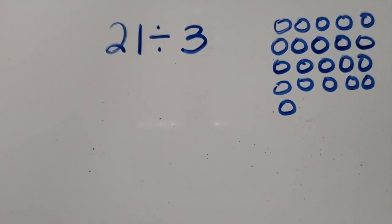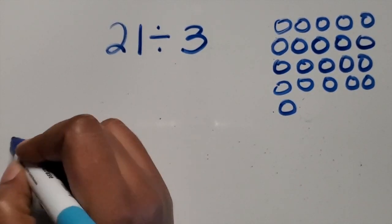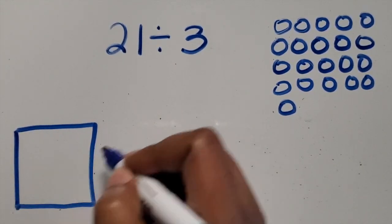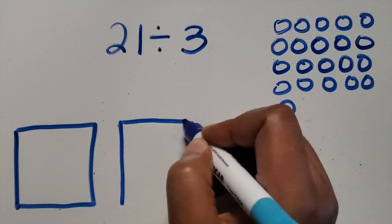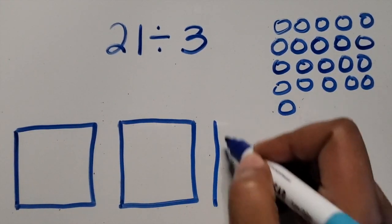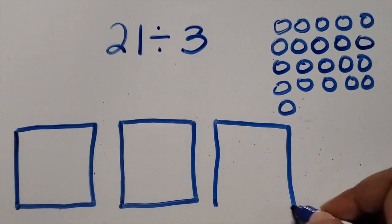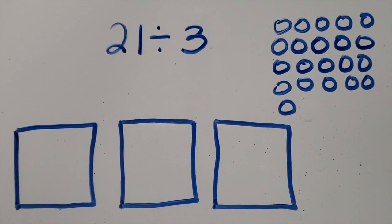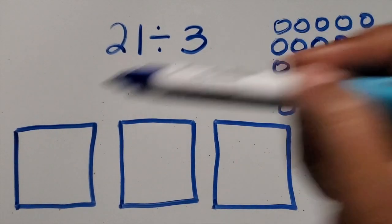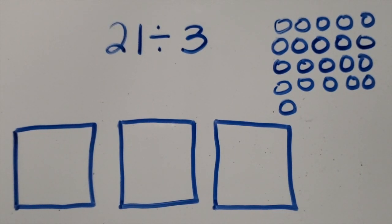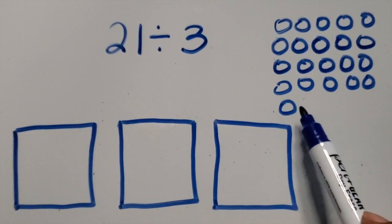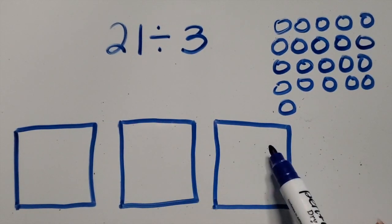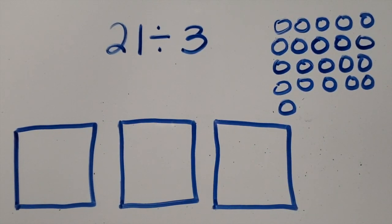So now we're going to represent our equal groups. I'm drawing three squares. We want students to draw their groups to be as close to the same size as possible — we don't want one small square and one large square. We also want them to draw large enough so that they can place their objects inside of their groups. We're going to take these circles and place them into the groups one by one, then cross them out as we go so that we don't recount.